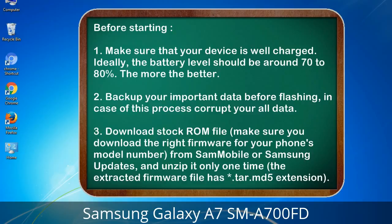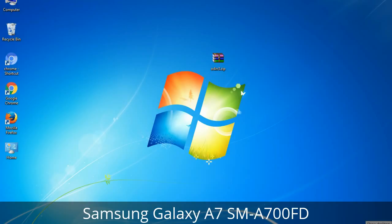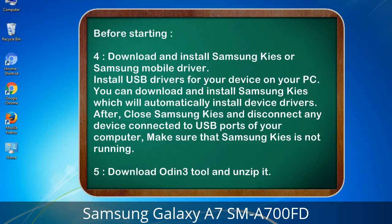3. Download the stock ROM file. Make sure you download the right firmware for your phone's model number from Sammobile or Samsung Updates, and unzip it only one time. The extracted firmware file has a *.tar.md5 extension. 4. Download and install Samsung Kies or Samsung mobile driver to install USB drivers for your device on your PC. Samsung Kies will automatically install device drivers. After that, close Samsung Kies and disconnect any device connected to USB ports of your computer — make sure Samsung Kies is not running. 5. Download the Odin 3 tool and unzip it.